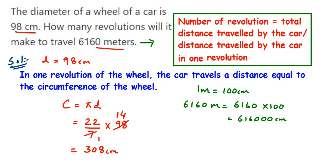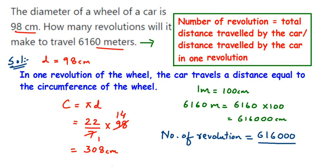Now we find the number of revolutions: total distance ÷ circumference = 616,000 ÷ 308. Both values are in centimeters, so the units cancel. Since 616 is twice 308 — because 308 × 2 = 616 — we can cancel to get 2 followed by three zeros, giving us 2000.